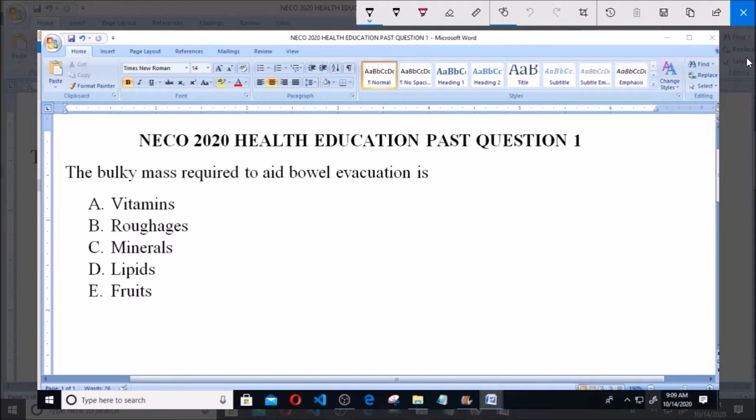The bulky mass required to aid bowel evacuation is: A vitamins, B roughages, C minerals, D lipids, and E fruits.